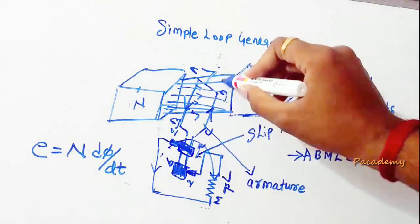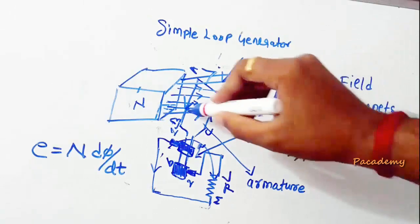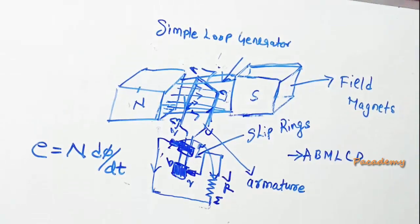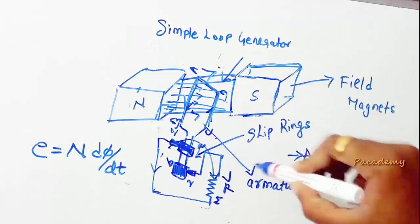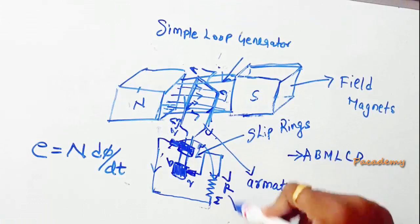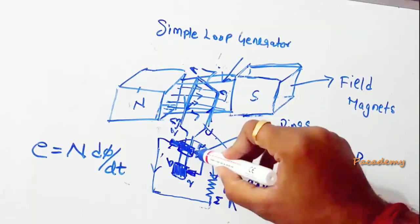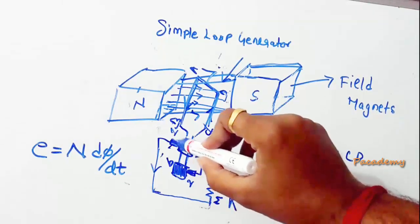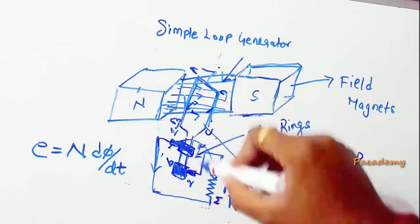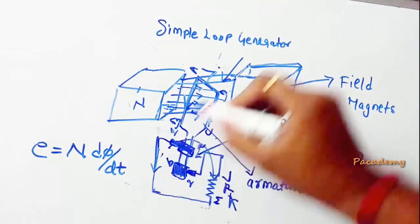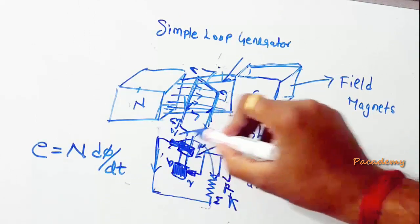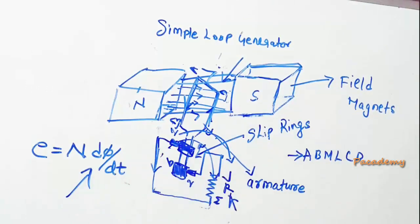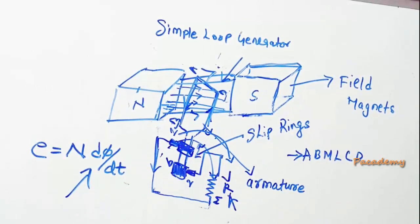This magnet produces a magnetic field. There is a conductor which forms a closed loop with two sides, AB and CD, connected to the external circuit or load resistance using slip rings. The slip rings are insulated from each other and connected to the external circuit using brushes named one and two. The EMF is induced when the coil moves in a clockwise direction in the magnetic field, according to E = N dΦ/dt.